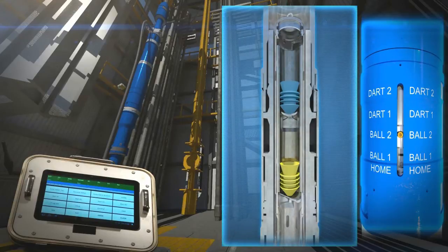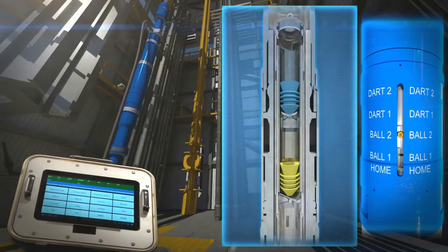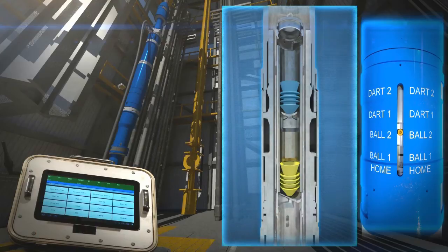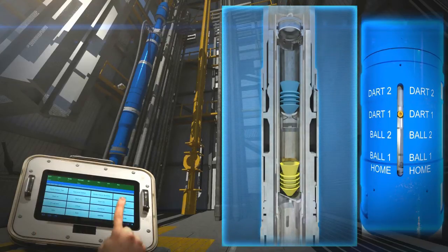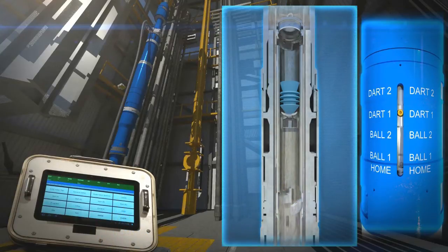Plugs are launched using positive fluid displacement rather than mechanical springs. This increases reliability and saves rig time with launch-on-the-fly capability. Once actuated from the control panel, the cementing head's internal sleeve continues to move upward, causing fluid to be diverted above the plug, forcing it down the drill pipe.